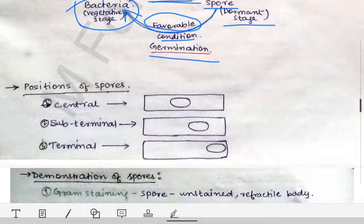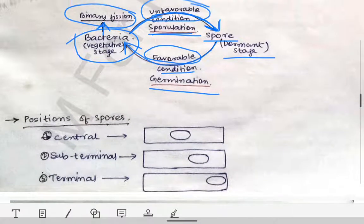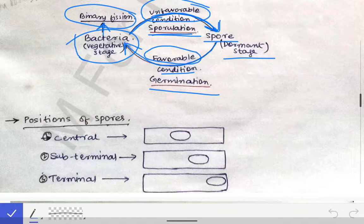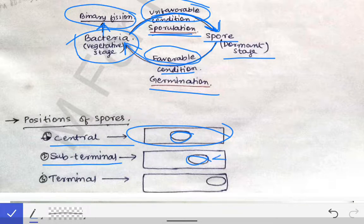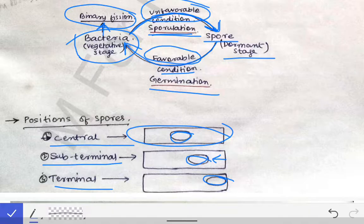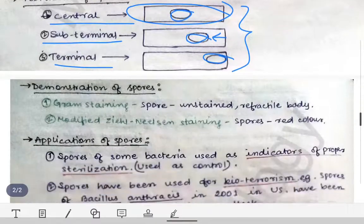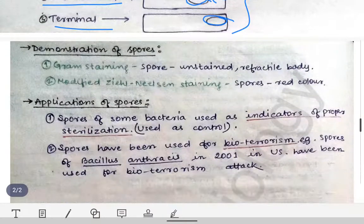Now, what is the position of the spore within the bacteria? The spore may be present in the central position, the sub-terminal position (just below the terminal end), or the terminal position at the very end of the bacteria.